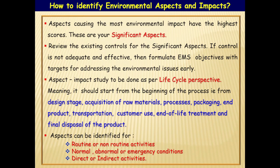Another important thing is that aspect impact study is to be done as per life cycle perspective — that is, from cradle to grave. Meaning it should start from the beginning of the process, that is from the design stage itself, acquisition of raw materials, manufacturing processes, packaging, finished product, transportation, customer use, end of life treatment, and final disposal of the products. Aspects can be identified as activities whether routine or non-routine, operating conditions whether normal, abnormal, or emergency, and direct activities where management can control or indirect activities where management has no control but can only influence.